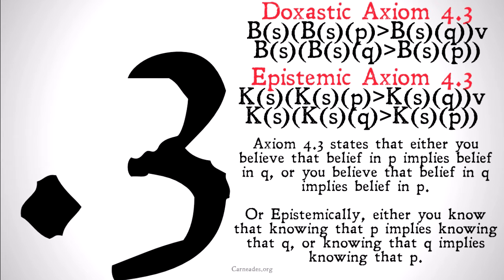Axiom 4.3 states that either you believe that belief in P implies belief in Q, or you believe that belief in Q implies belief in P. Or epistemically, either you know that knowing P implies knowing Q, or knowing Q implies knowing P. In the doxastic form: S believes either that S believes P implies S believes Q, or S believes Q implies S believes P.